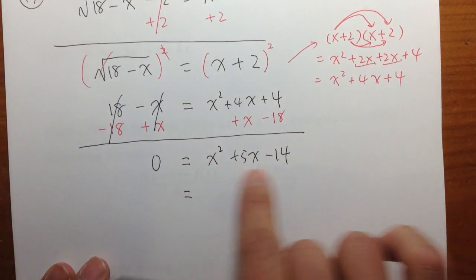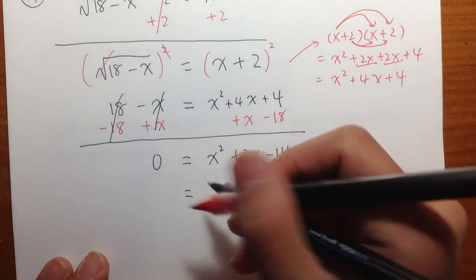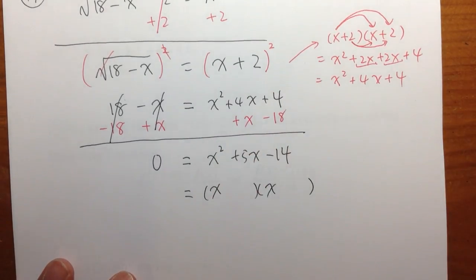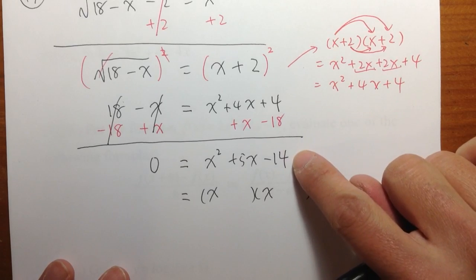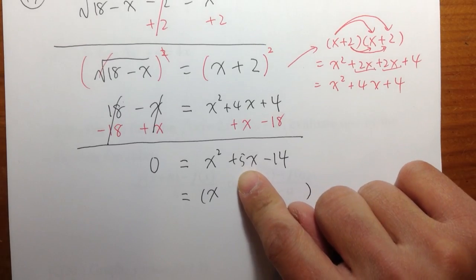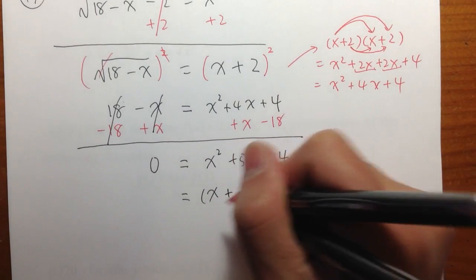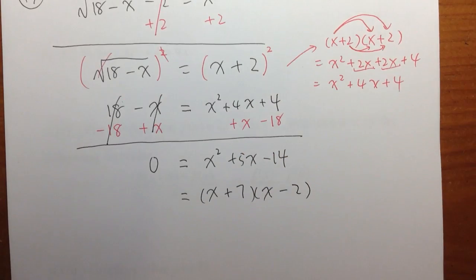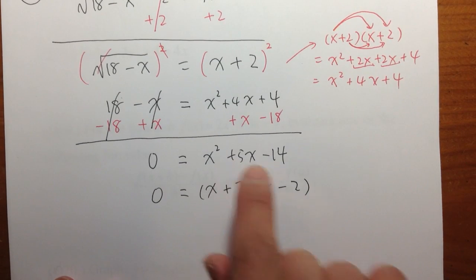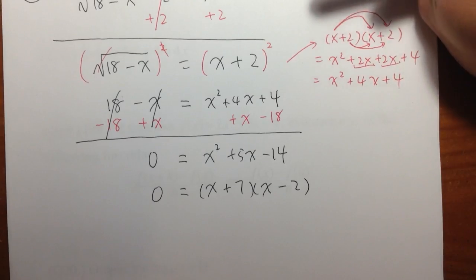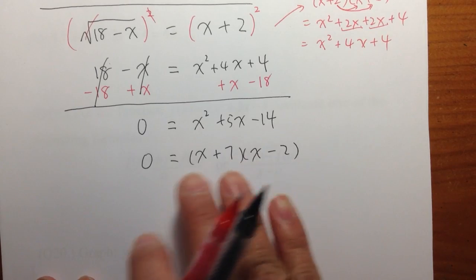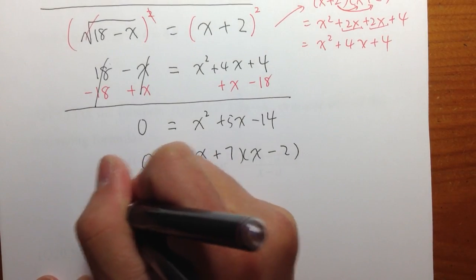Next, we want to try to factor this. I have x squared, so let's put two parentheses. To get x squared, put x and x — that produces x squared. For the negative 14, think about what times what equals negative 14 and adds up to positive 5. The correct combination should be 7 and negative 2. 7 minus 2 is positive 5, and 7 times negative 2 is negative 14. Sometimes you just have to guess and check a little bit to do factoring. Now we have two things multiplied equal to 0, so we set each factor equal to 0.